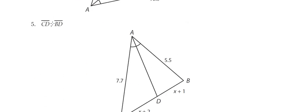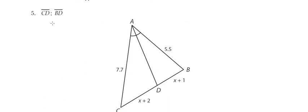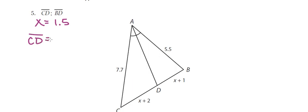Then we went on to number 5. Hopefully you set up (x+1)/(x+2) = 5.5/7.7, or equivalently (x+1)/5.5 = (x+2)/7.7. Regardless, I hope you were able to get an x value of 1.5. That x value of 1.5 creates a value of CD that is 3.5 units long and a value of BD that is 2.5 units long.